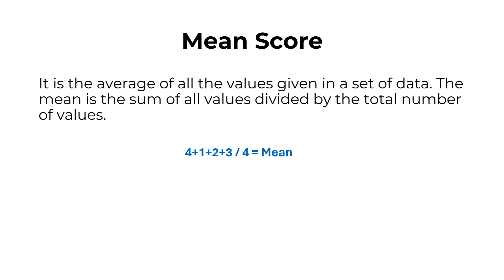The mean score is the average of all the values given in a data set. The mean is the sum of all values divided by the number of respondents or values. Here you could see respondent one rated the statement as four, strongly agree, then we have one strongly disagree, then disagree, then agree.